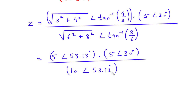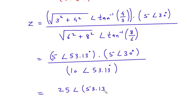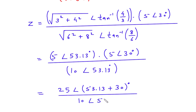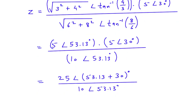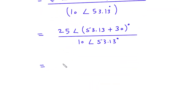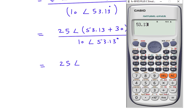Now, as we know, multiplication and division are better performed in polar form, and now all values are in polar form. So first of all we will multiply. It will be 5 multiplied by 5, which is 25, at an angle of — since it is multiplication, 53.13° and 30° will be added — so 53.13 + 30 degrees, divided by 10 at an angle of 53.13 degrees.